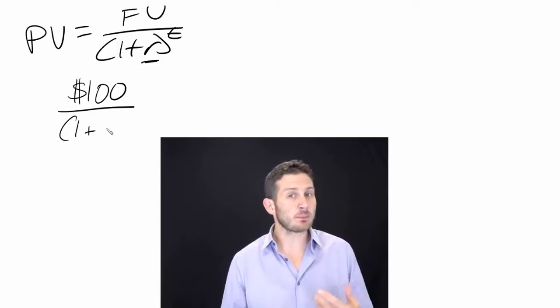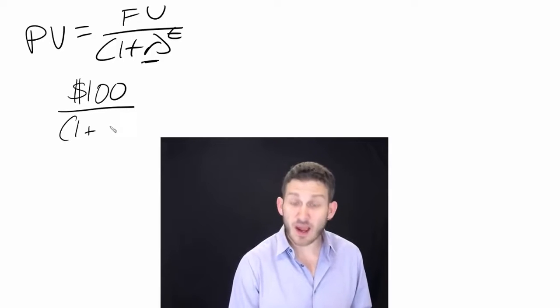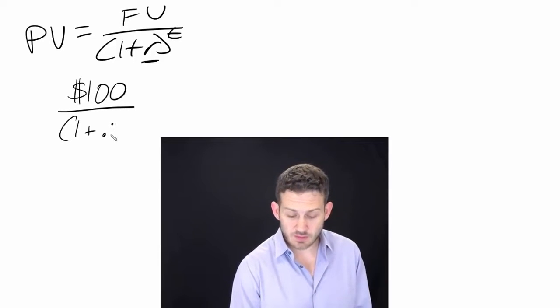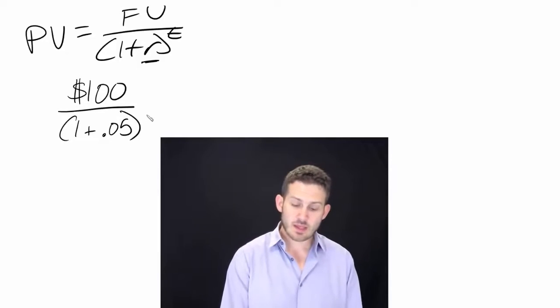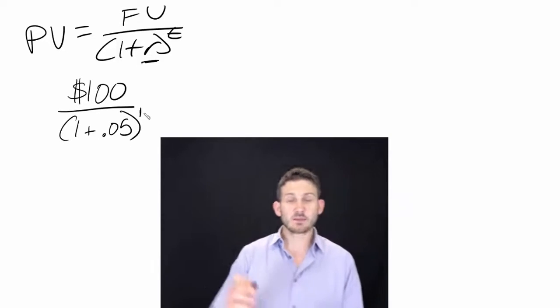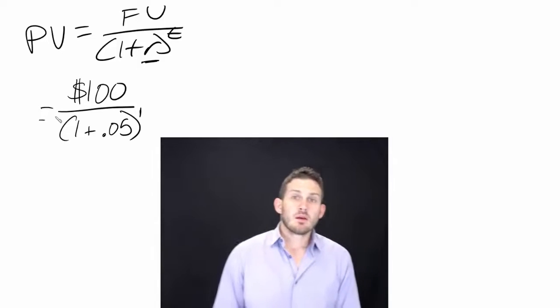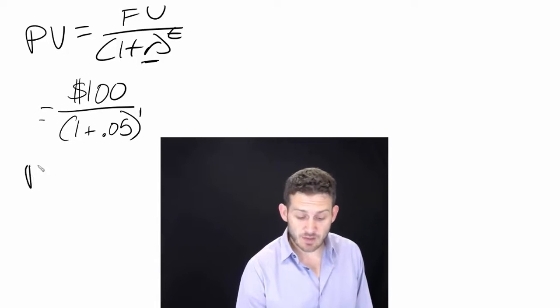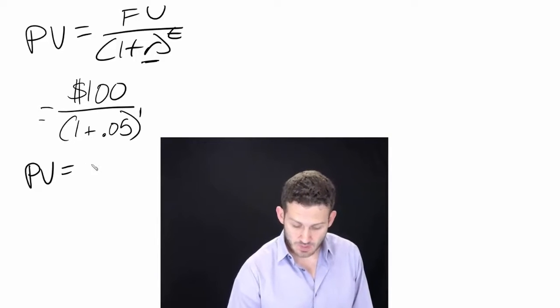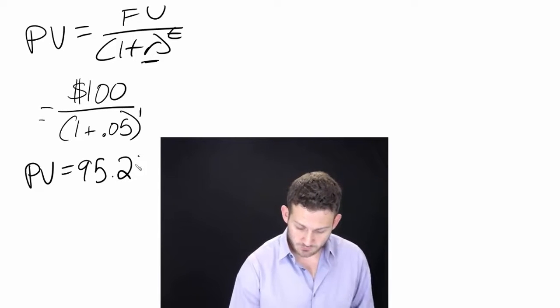Let's say I could take those same funds and stick them into an account at 5%. So that's going to be 0.05, and that's going to be in one year, so t equals 1. This tells us that we have a present value of $95.24.